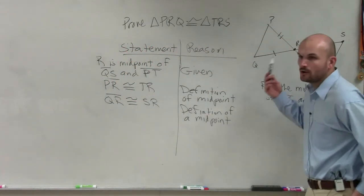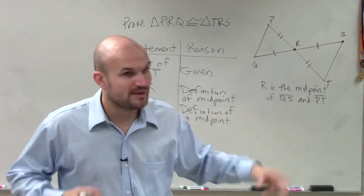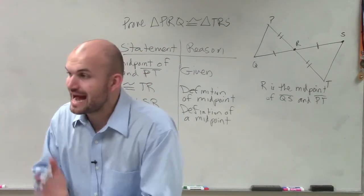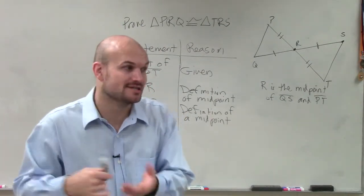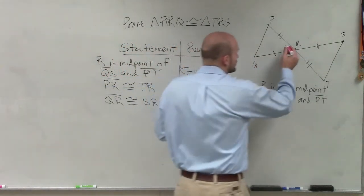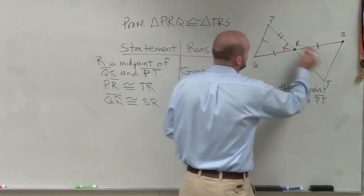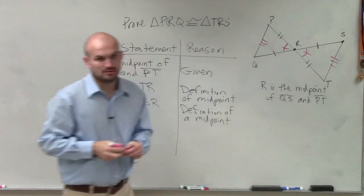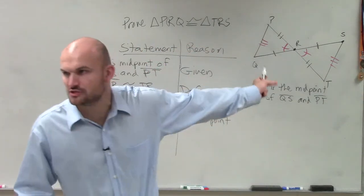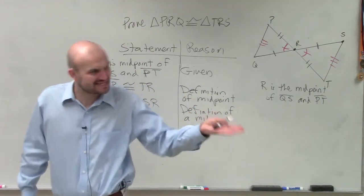So now to prove this, there's only two things that we've talked about so far to prove this. We either have to have side, side, side, or side, angle, side, where that angle is included. So I need to either show or somehow prove that those two angles are equal, or I need to prove that these two sides are equal. Does anybody have an idea why those two angles are equal or why those two sides are equal? Anybody have an opinion that's based in fact?